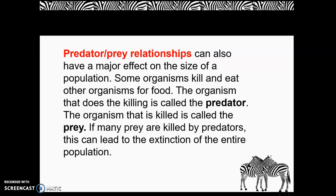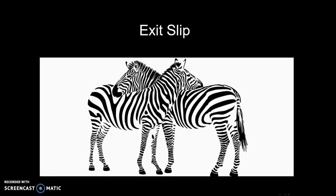Predator-prey relationships can also have a major effect on the size of a population. Some organisms kill and eat other organisms for food. The organism that does the killing is called the predator, and the organism that is killed is called the prey. If many prey are killed by predators, this can lead to the extinction of the entire population.